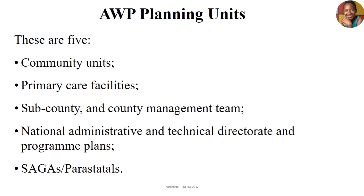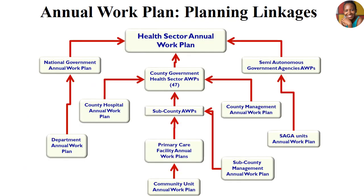The planning units based on the levels we've discussed generate approximately five levels. We have the community level, which is the lowest. Then we have primary care facilities — dispensaries and health centers. From there we move to sub-county and county management teams. The fourth level is the national administrative and technical directorial planning units. Finally, there are the semi-autonomous government agencies or parastatals, which are also planning units although they do not directly influence the other levels.